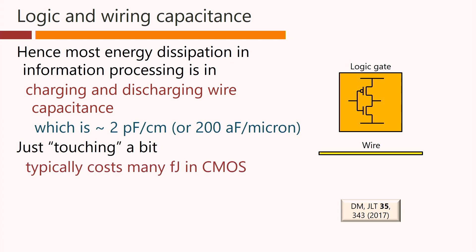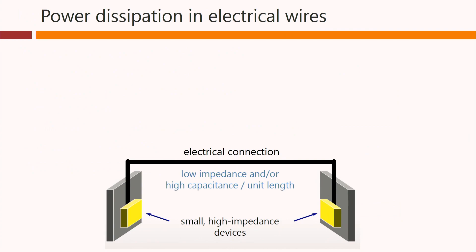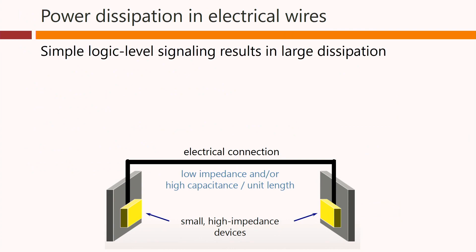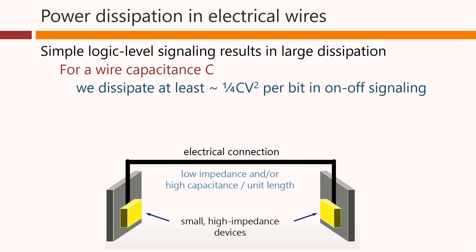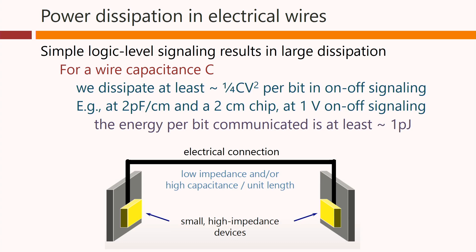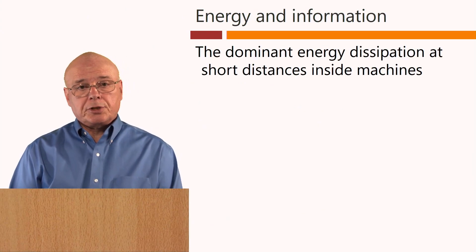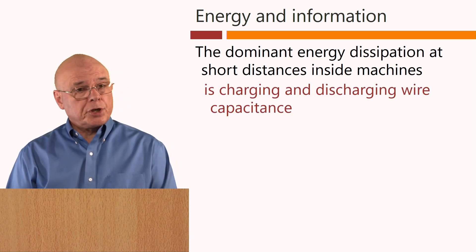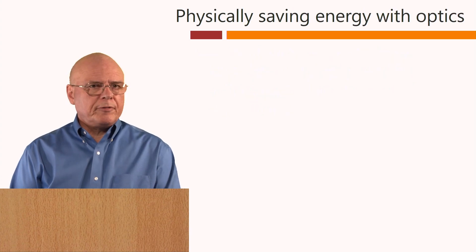Touching a bit typically costs many femtojoules in CMOS because of the combination of logic and wiring capacitances we have to charge and discharge. Simple logic-level signalling results in large dissipation: for a wire capacitance C, we dissipate at least ¼CV² per bit in on-off signalling. For example, at 2 pF per centimetre wire capacitance on a 2 cm chip at 1 V on-off signalling, the energy per bit is at least a picojoule. The dominant energy dissipation in short distances inside machines is charging and discharging wire capacitance.